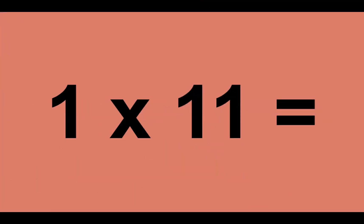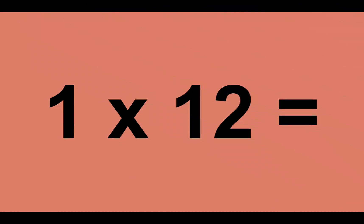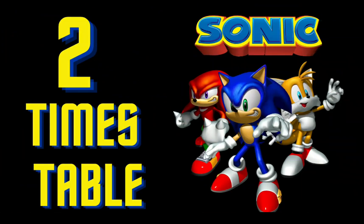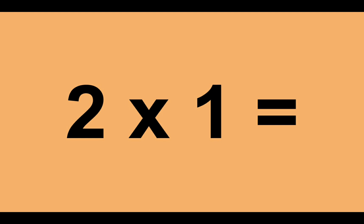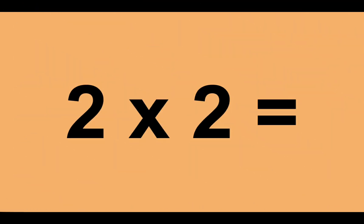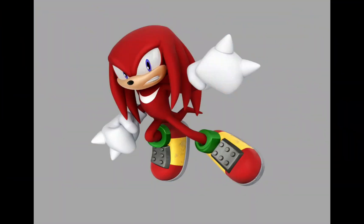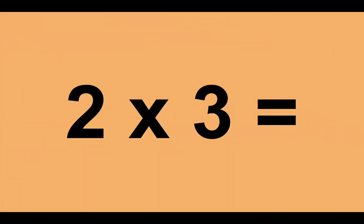One times eleven equals eleven. One times twelve equals twelve. Two times zero equals zero. Two times one equals two. Two times two equals four. Two times three equals six.